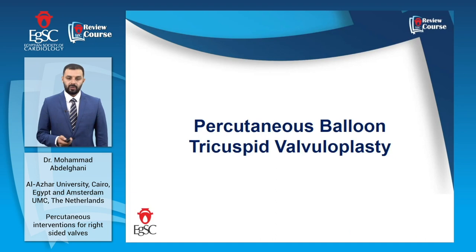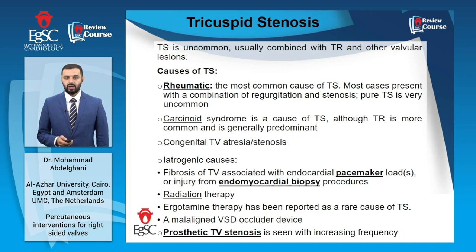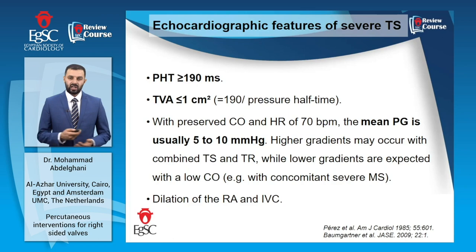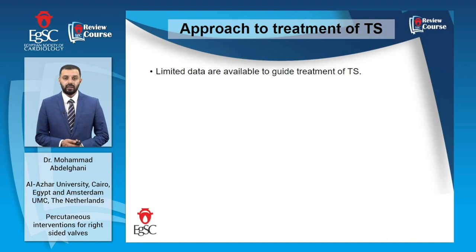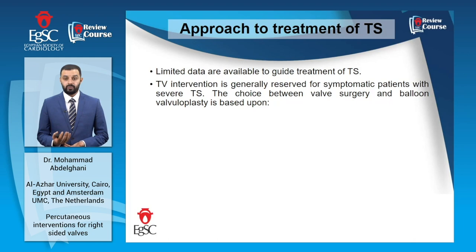Moving to percutaneous balloon tricuspid valvuloplasty: isolated tricuspid stenosis is a relatively rare condition. The most common causes include rheumatic heart disease, repetitive injury with pacemaker leads or endomyocardial biopsy especially in heart transplant patients, and prosthetic tricuspid valve stenosis, which is seen with increasing frequency. The definition of severe tricuspid stenosis is not very well established and is based on pressure half-time, reduced pressure half-time-derived tricuspid valve area, and elevated transvalvular gradient. The approach to treatment is also not well established due to paucity of data, and in general tricuspid valve intervention is reserved for symptomatic patients with severe tricuspid stenosis.